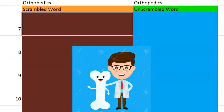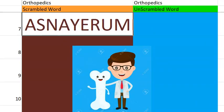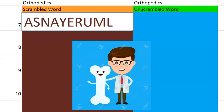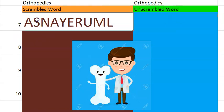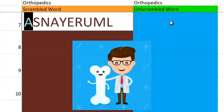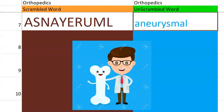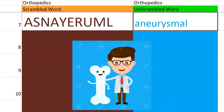Let's go to the seventh one. What do you think this one is? It is starting with an A. It is something to do with the blood vessel type, aneurysmal. So aneurysmal bone cyst — it's a blood-filled lesion in the bone. It tends to expand and grow.